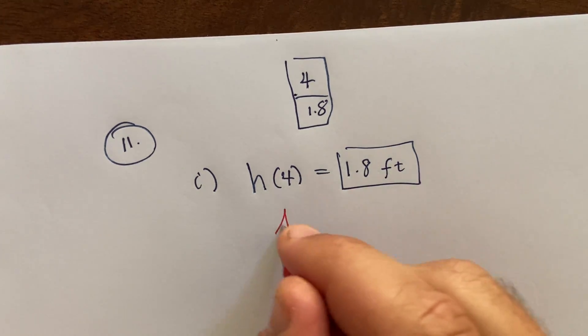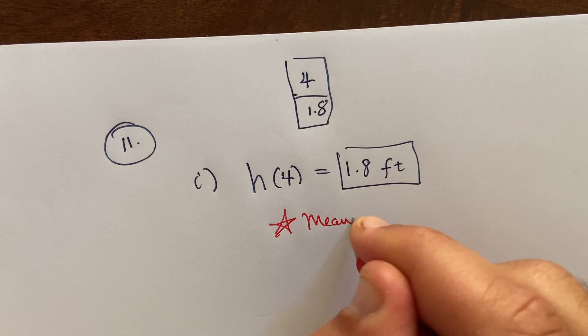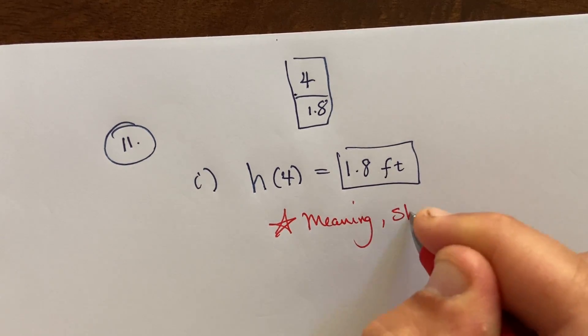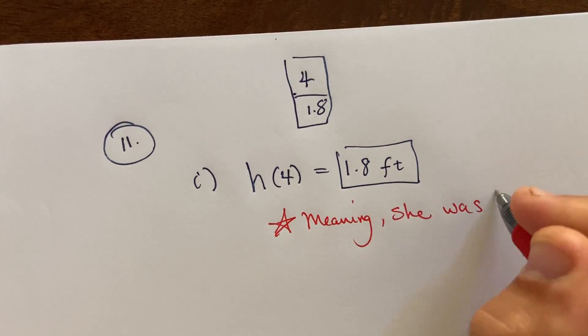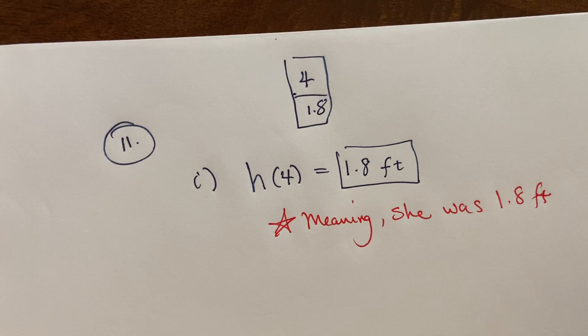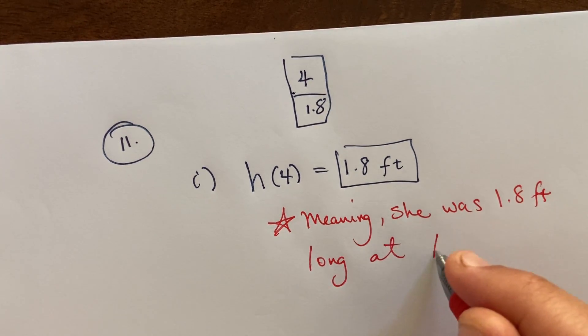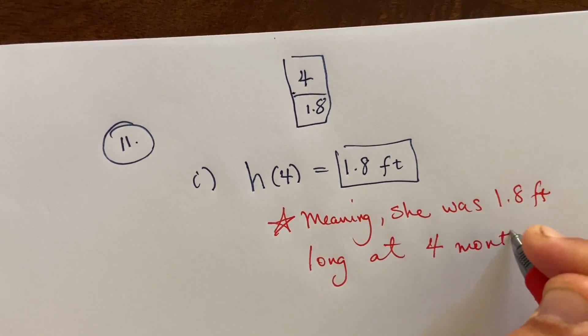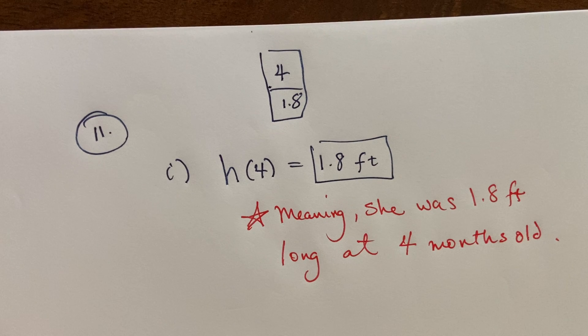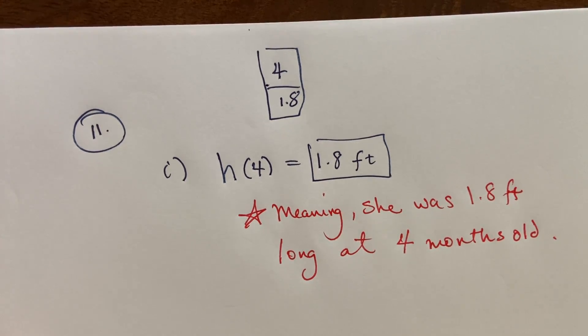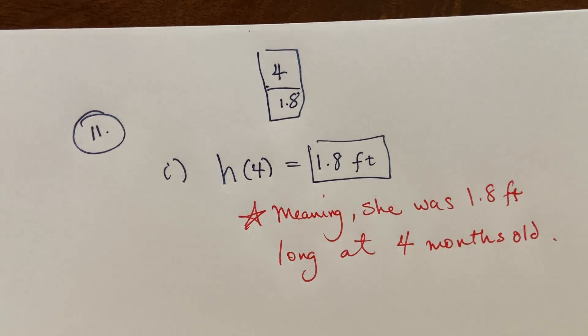Because the four tells us we're looking at that number of months, and then the one point eight tells us that that's the length or the height that we're interested in. That would be feet. And then it also says explain, so meaning she was 1.8 feet long—because she's really not standing at four months—at four months old.